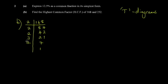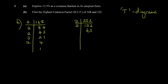Now do the same for 252 using a T-diagram. Since 252 ends in an even digit, 2 is a factor. Two into 252 gives 126, two into 126 gives 63. By inspection, 3 is a factor — three into 63 gives 21, three into 21 gives 7, seven into 7 gives 1. So we've found the prime factorization of both numbers.